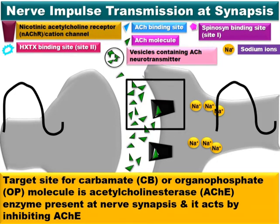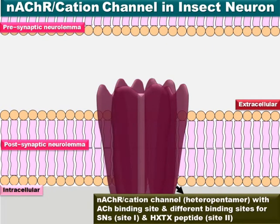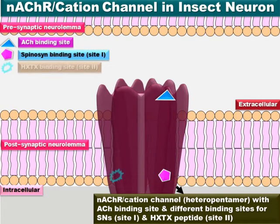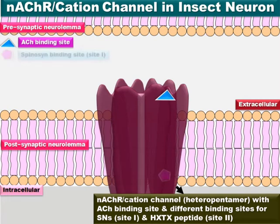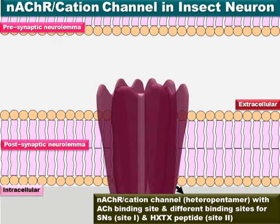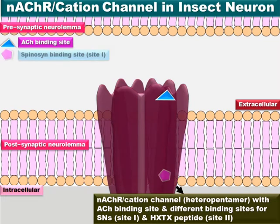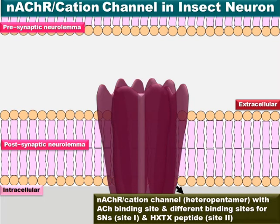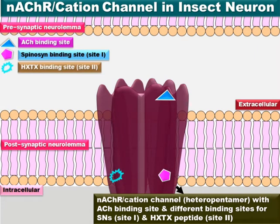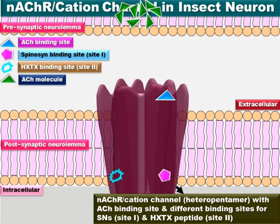Shown in the rectangular box is the nicotinic acetylcholine receptor and cation channel complex, with the acetylcholine molecule binding site shown as a blue triangle, the spinosyn molecule binding site as a pink pentagon, and the HXTX peptide molecule binding site as a bluish-green irregular circle. The nicotinic acetylcholine receptor and cation channel complex is a heteropentamer — made up of five subunits of at least two types — and is currently in the inactivated or closed state.